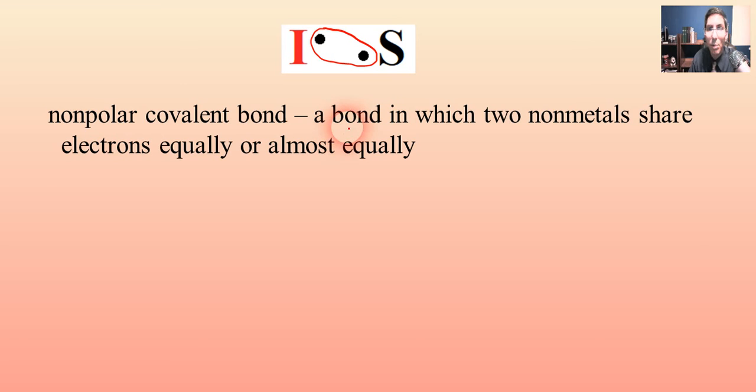When we say non-polar bond, we're saying that these two non-metals will share the electrons equally or almost equally. What that means is these two electrons are probably going to be fairly equidistant between the two atoms there. Sulfur will get to use these about half the time, and iodine will get to use these electrons about half the time. So it's a fairly equitable sharing relationship.